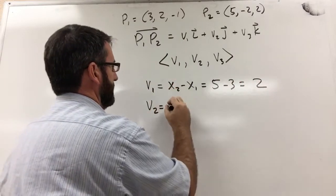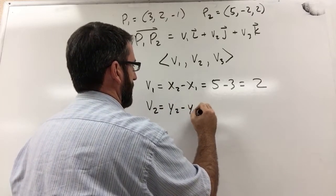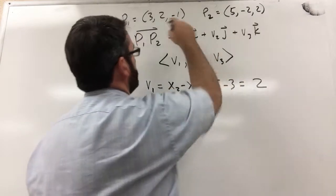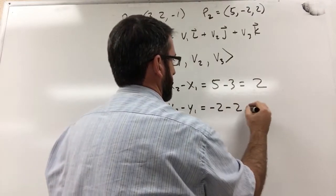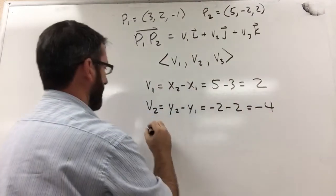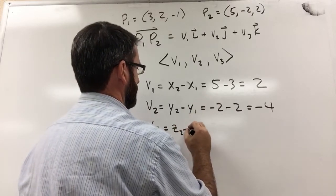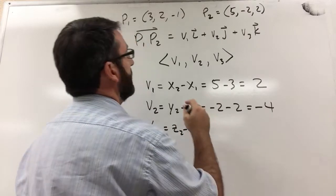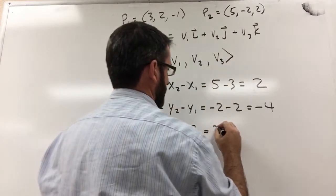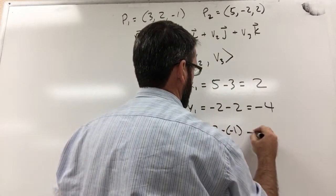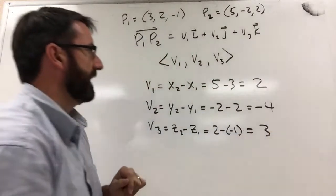v2 is going to be y2 minus y1, which is negative 2 minus 2, which is negative 4. And then v3 is z2 minus z1, which is 2 minus negative 1, which is 3.